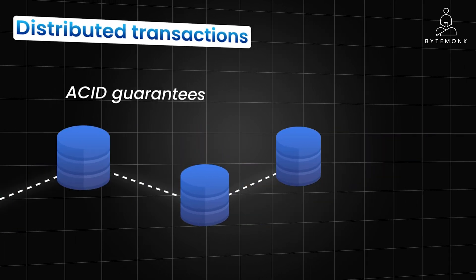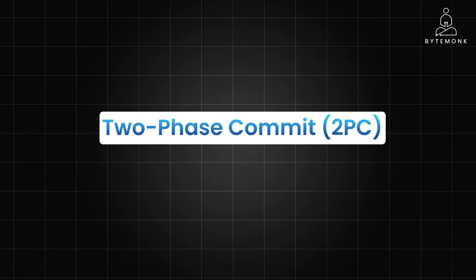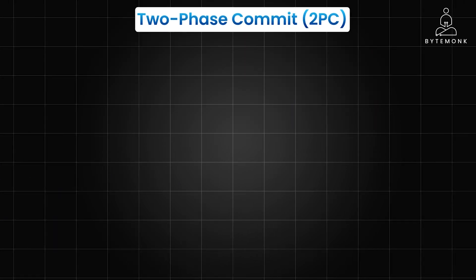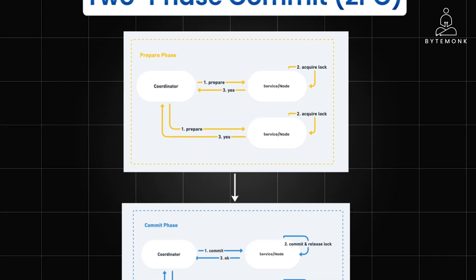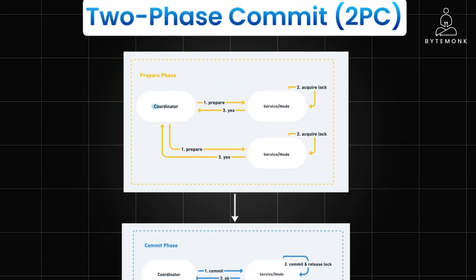The most common way to implement distributed transactions is the two-phase commit, or 2PC, protocol. There are two phases to this algorithm: the prepare phase and the commit or rollback phase. In the prepare phase, a coordinator — a central service — sends a prepared message to all participants, basically the services involved in the transaction.